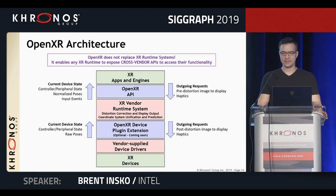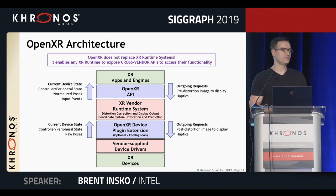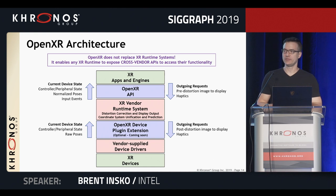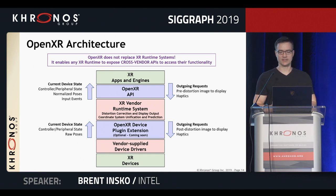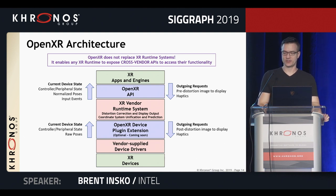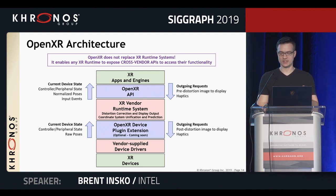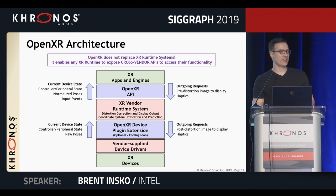This is a flow of information to and from the application through the whole XR system. Through the OpenXR API, the runtime sends things like controller state, pose information, and input events to the application. In return, the application sends pre-distorted images to display and haptic output information to the runtime. It's important to note that OpenXR is not replacing the runtimes — it's merely the mechanism for runtimes to expose their features via a cross-platform API.